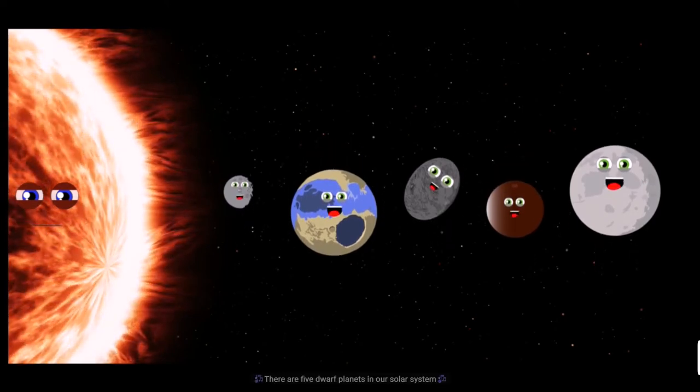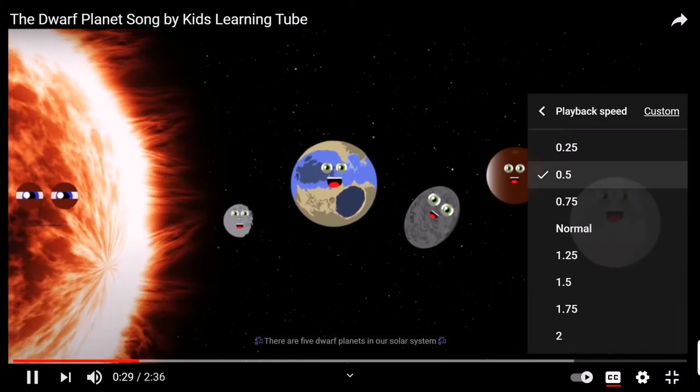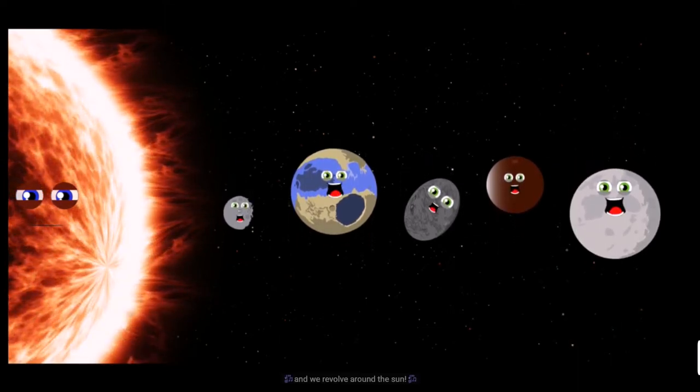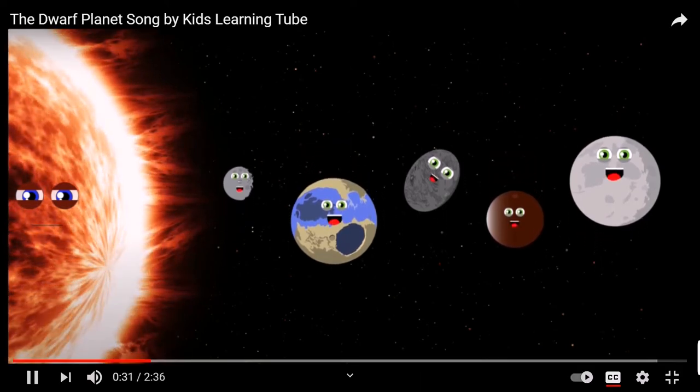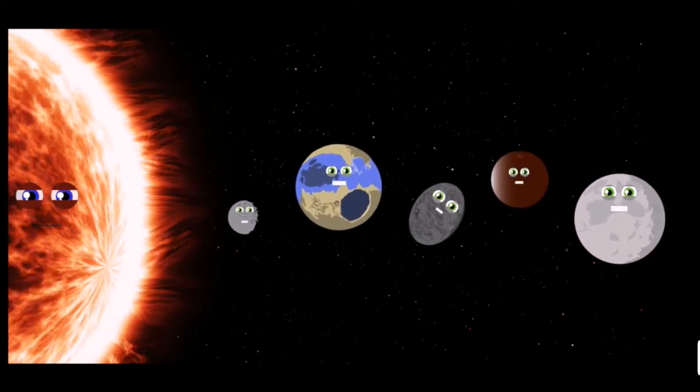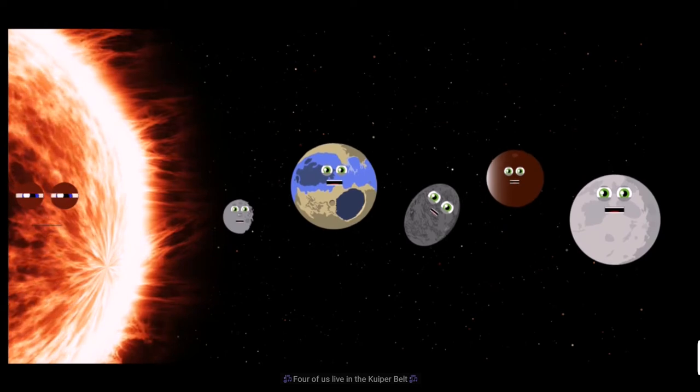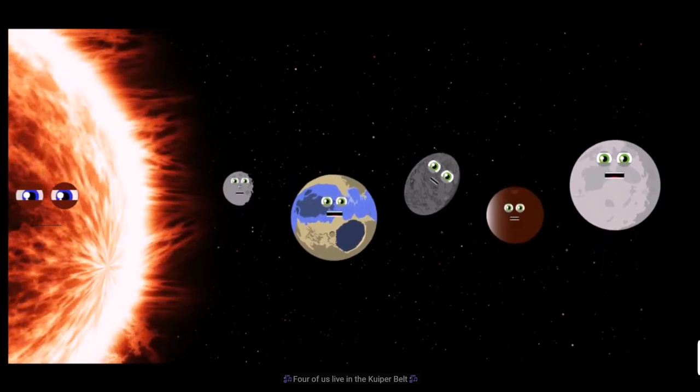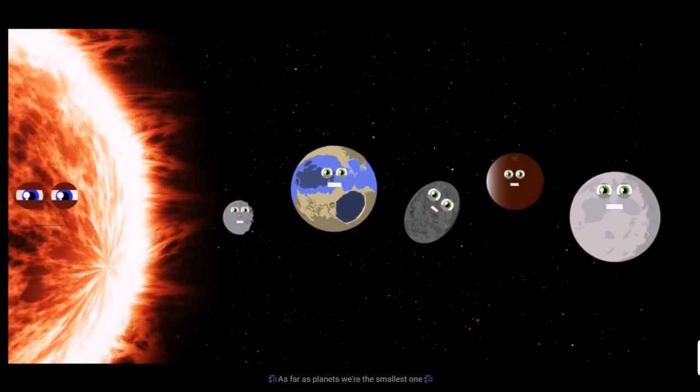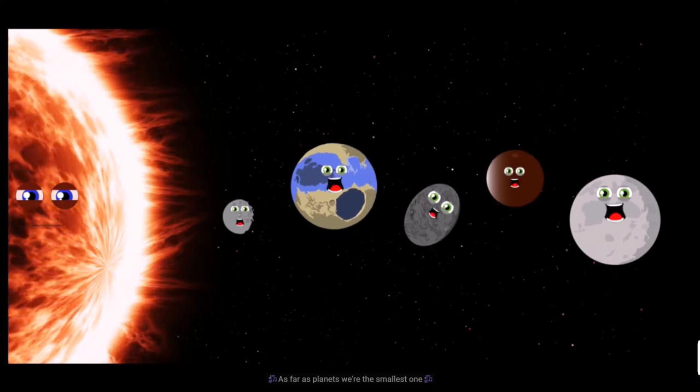There are five dwarf planets in our solar system and we revolve around the sun. Four of us live in the Kuiper Belt. As far as planets, we're the smallest ones.